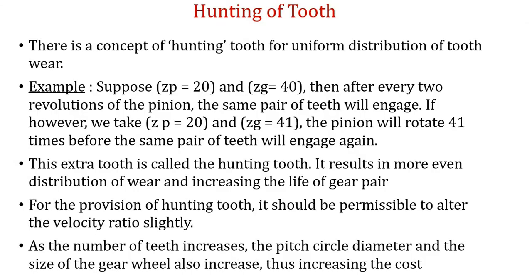Now we will see what is meant by hunting of a tooth. Hunting of a tooth means adding one or more teeth on the gear or pinion. Generally we add one or two teeth, and we do the hunting to uniformly distribute the tooth wear. For example, suppose on a pinion there are 20 teeth and on the mating gear there are 40 teeth.